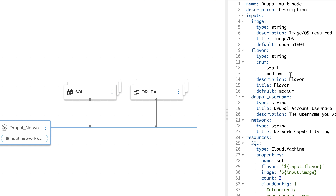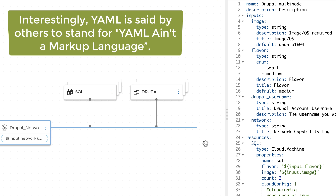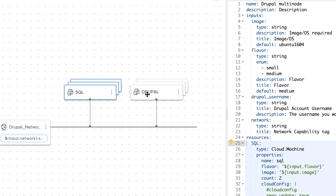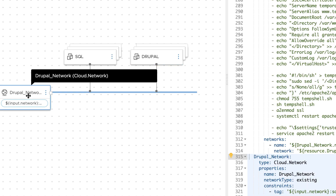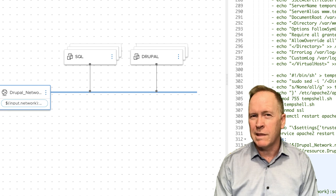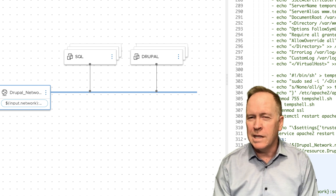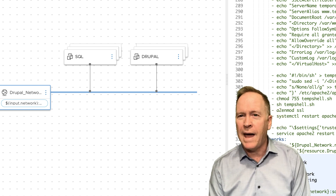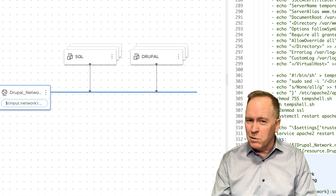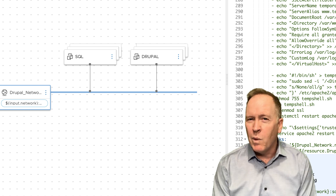This YAML editor contains code that describes exactly how this blueprint deploys the software, machines, networks, and other components. YAML — Y-A-M-L — stands for Yet Another Markup Language. Each of these components dragged in, like the SQL database, the Drupal application server, and the network, will automatically get YAML code inserted into the YAML editor, which we can use as-is or modify. But we're here not to talk about the blueprint designer — we want to talk about subscriptions.